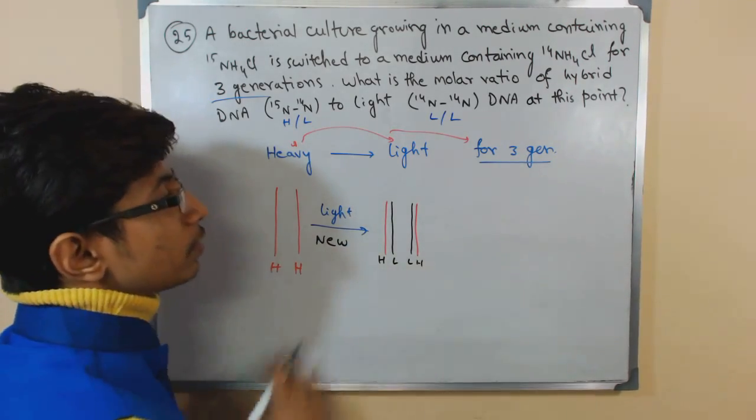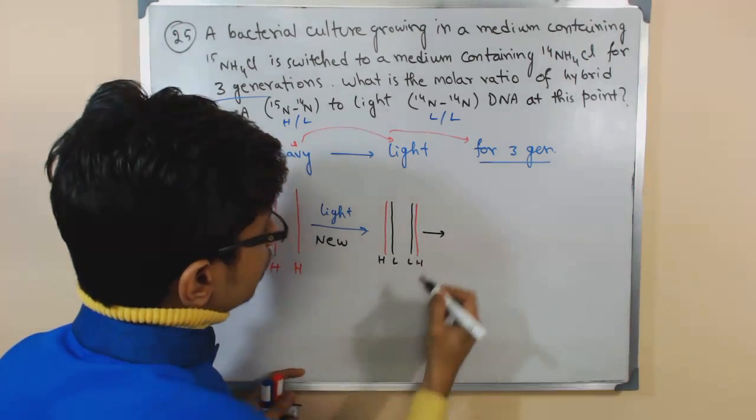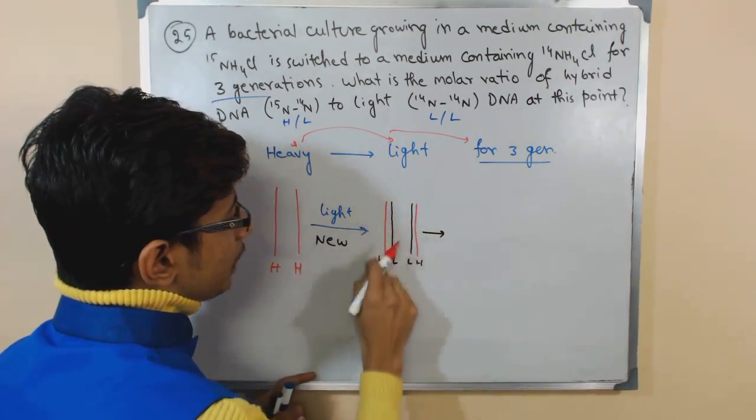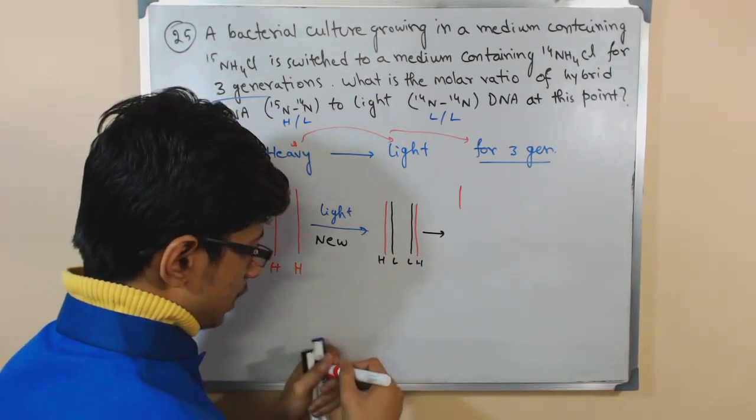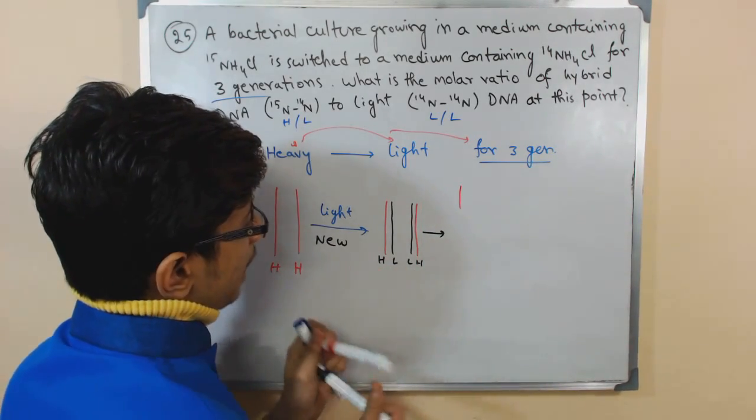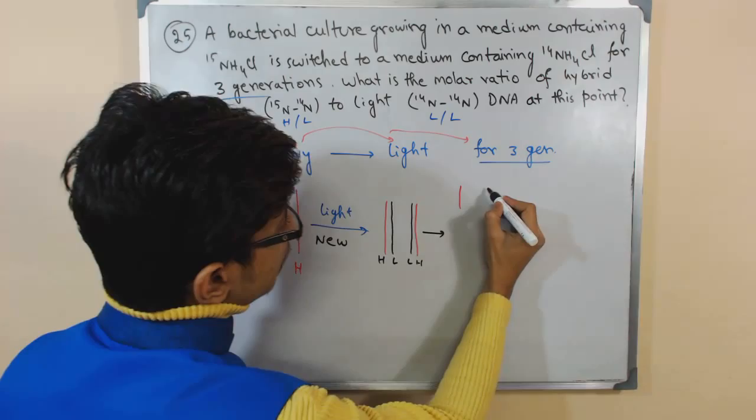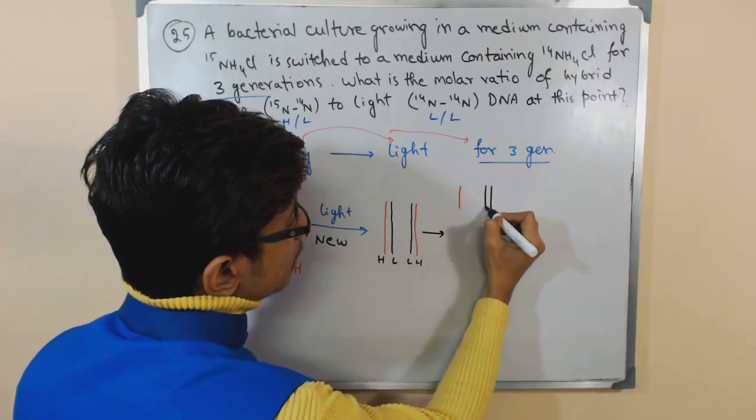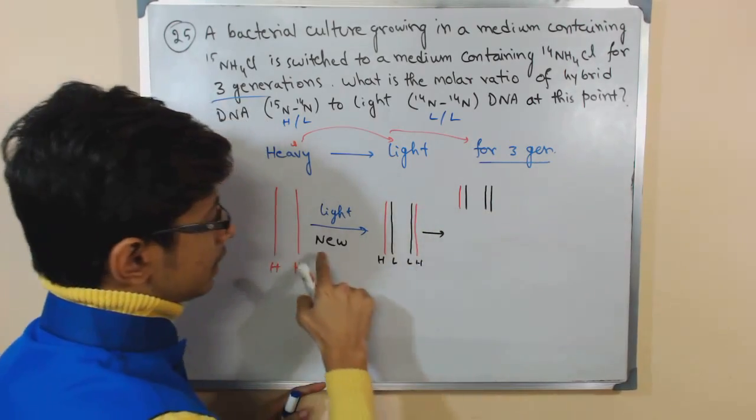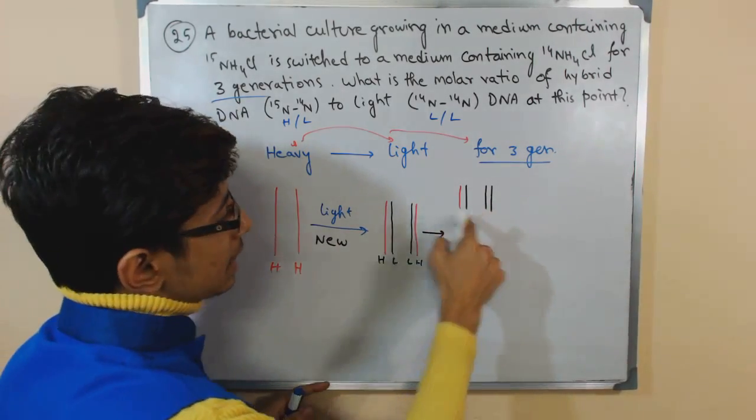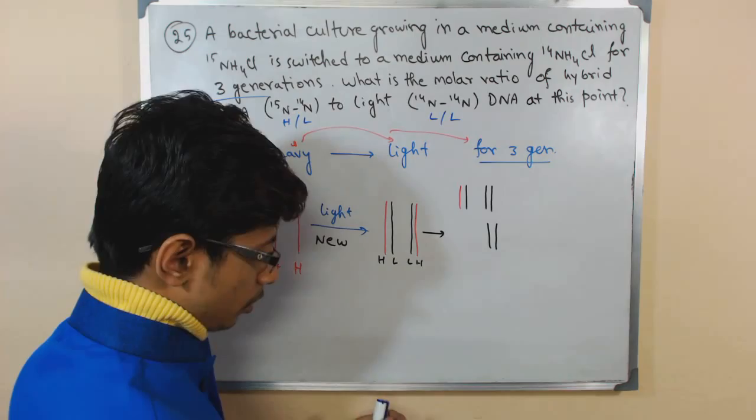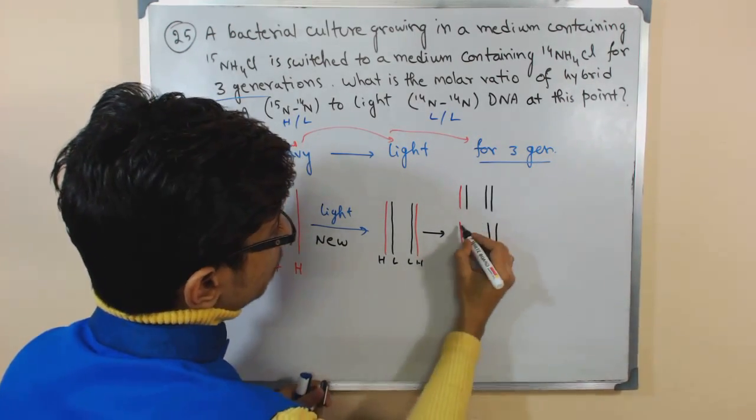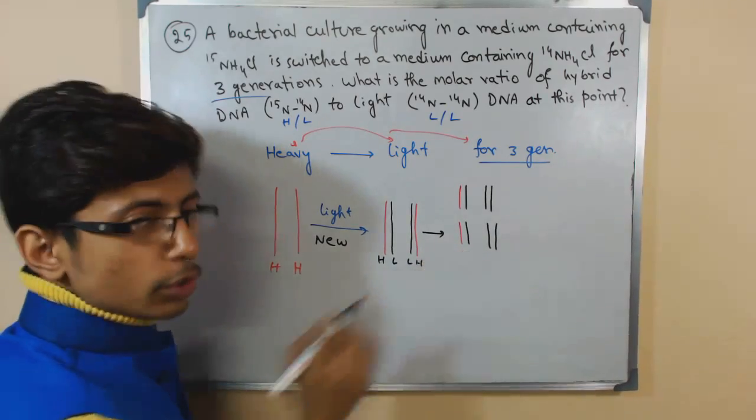Similarly we transfer into two more generations. So in the next generation what happens? Remember, from each of them, this is the parent strand, this black is another parent strand, and using this parent strand new strands start to synthesize and they will be light. Similarly same thing happens to the other one. So this is generation two.